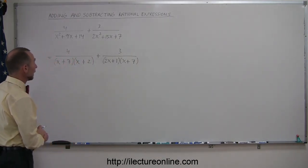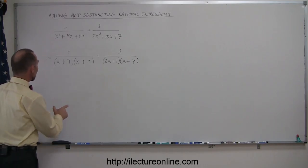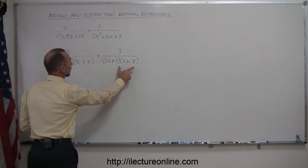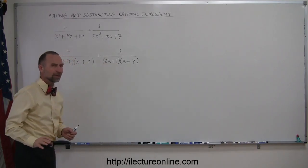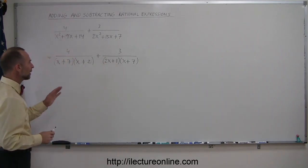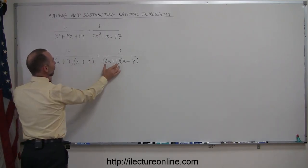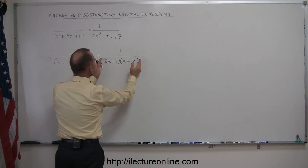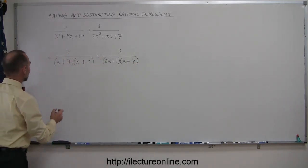Now, do I have any commonalities between the two denominators? And yes, I do. I have an x plus seven here, and I have an x plus seven there, but here I have an x plus 2, and there I have a 2x plus 1. So they're not quite common. To make them common, I will have to multiply the left denominator by 2x plus 1, and I will have to multiply the right denominator by x plus 2. Then I will have a common denominator. So let's do that.